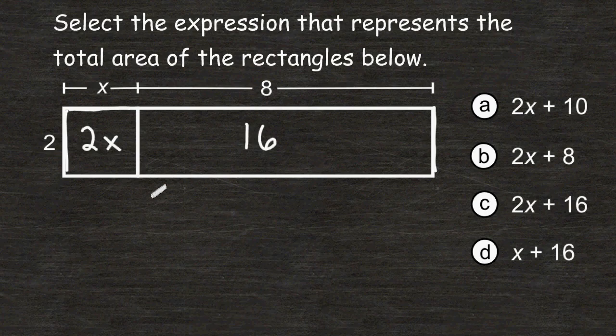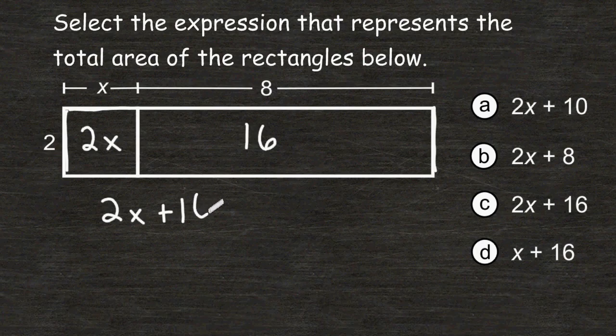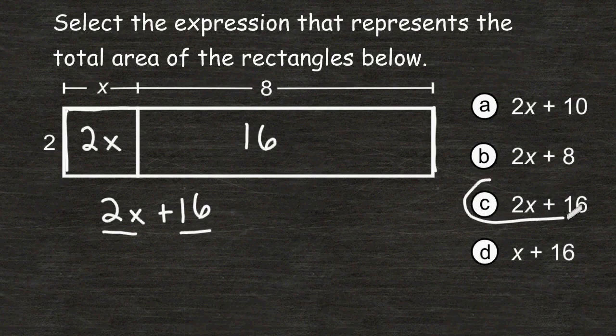And what we would do is combine these two areas together. So we would combine 2x and 16. Because this term and this term are not like terms, we cannot combine them together. So this expression is as far as we can take it. So the correct choice must be choice C.